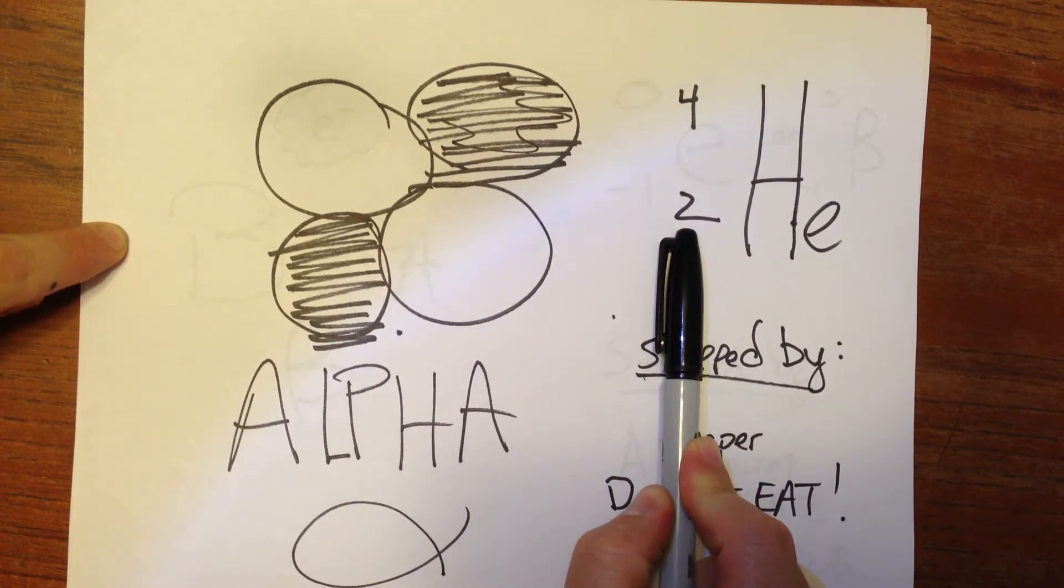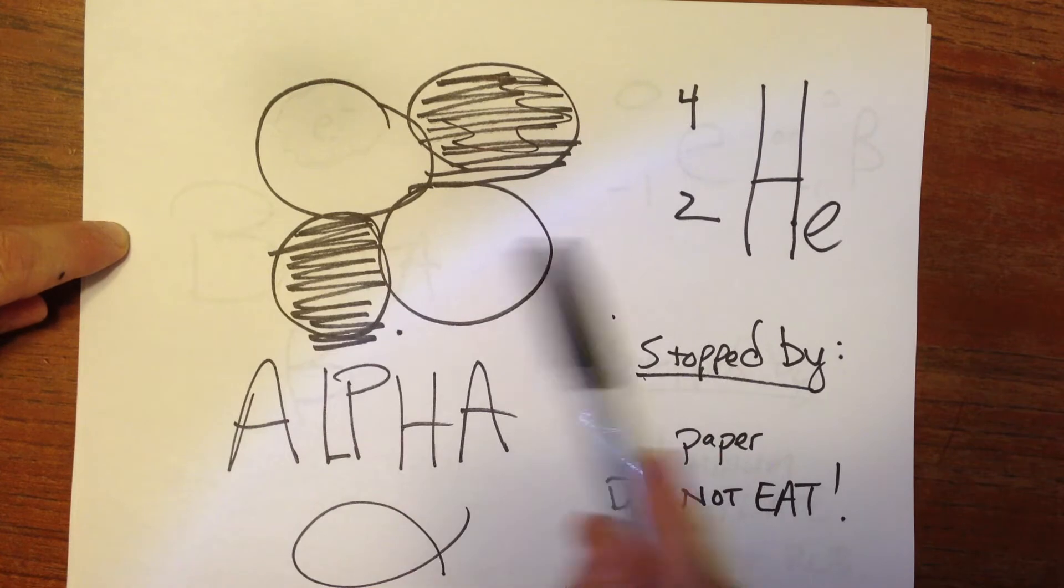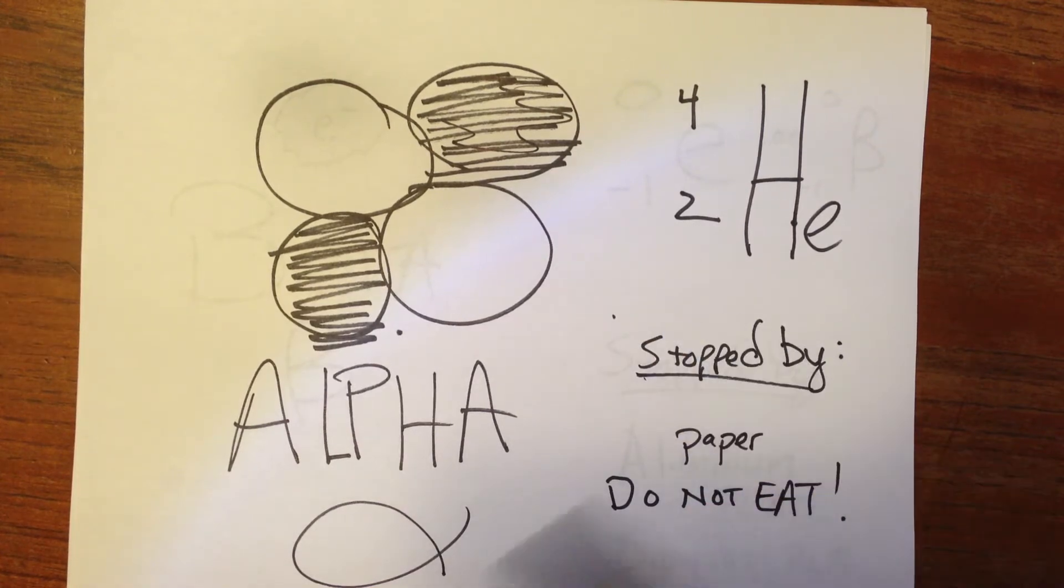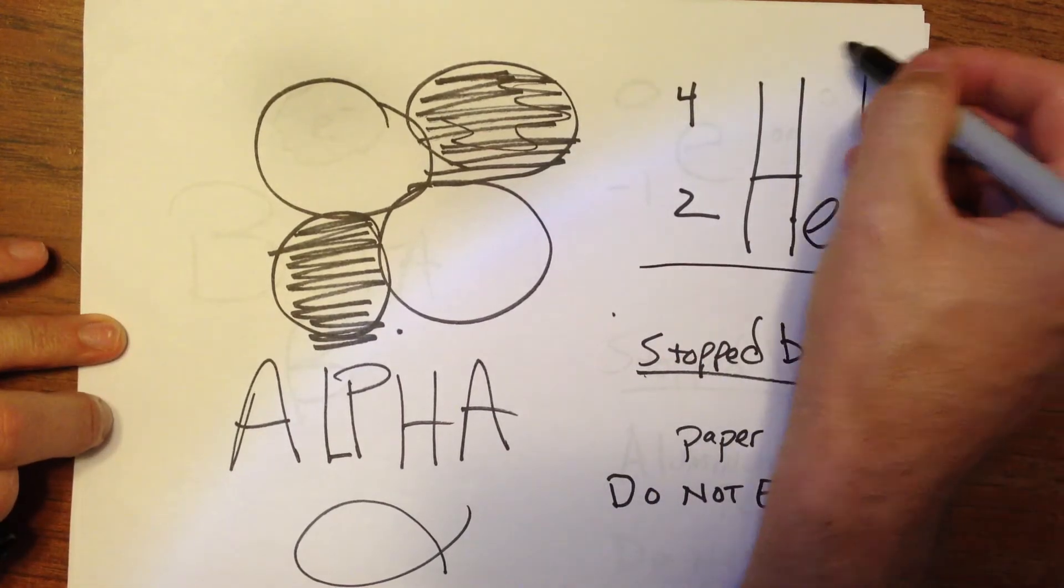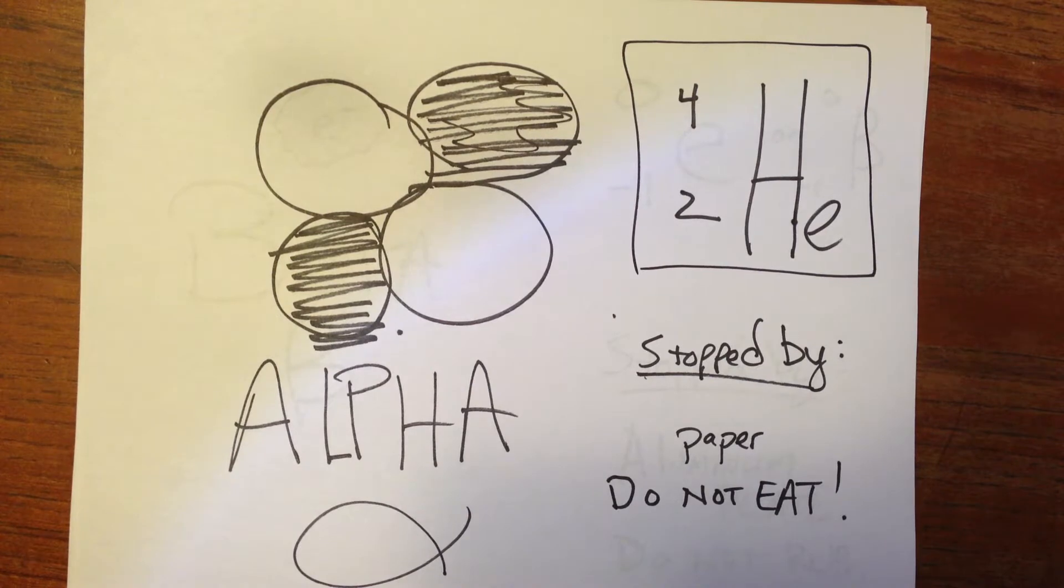So its atomic number is two, and if you look at two on the periodic table, you'll see that that is helium. So that is where we get the helium nucleus. This is what an alpha particle would be symbolized like in a nuclear equation.